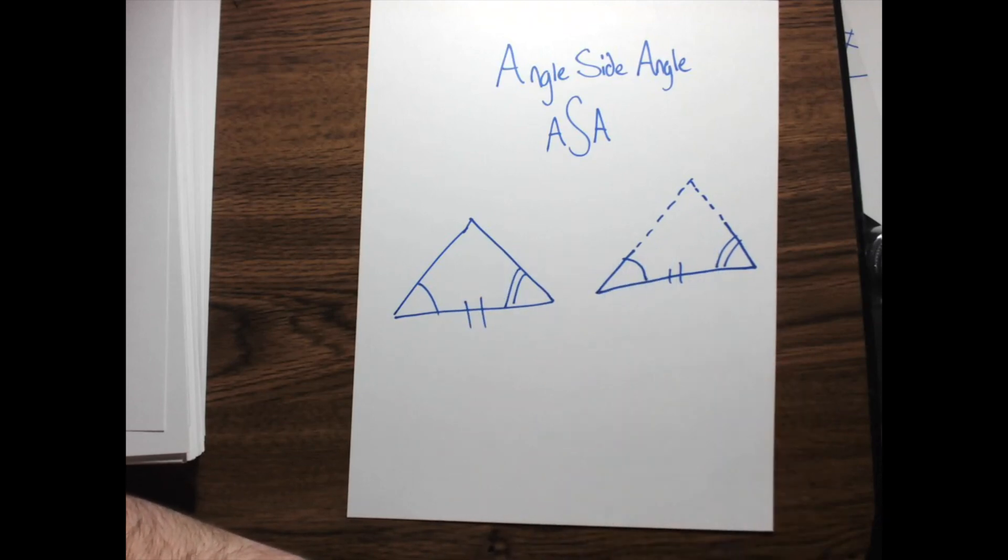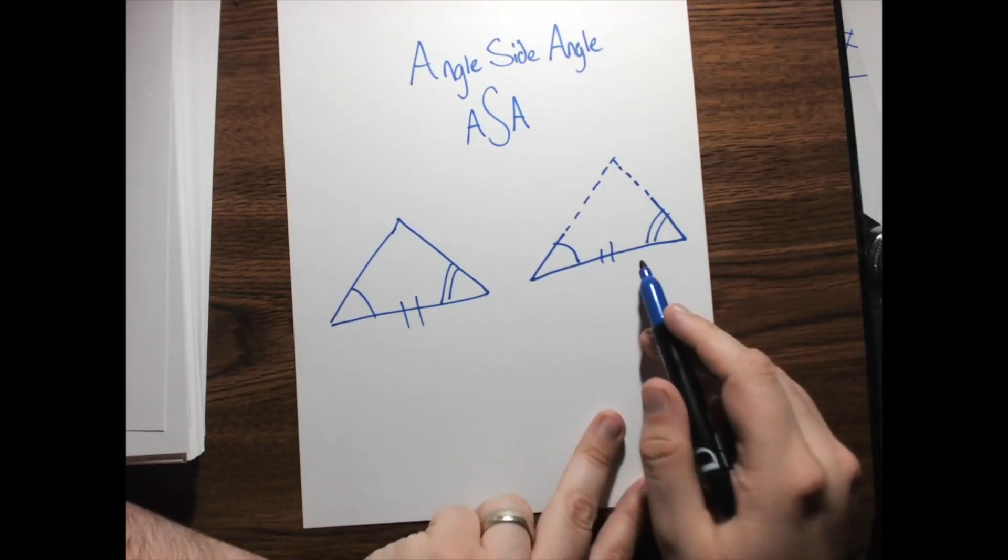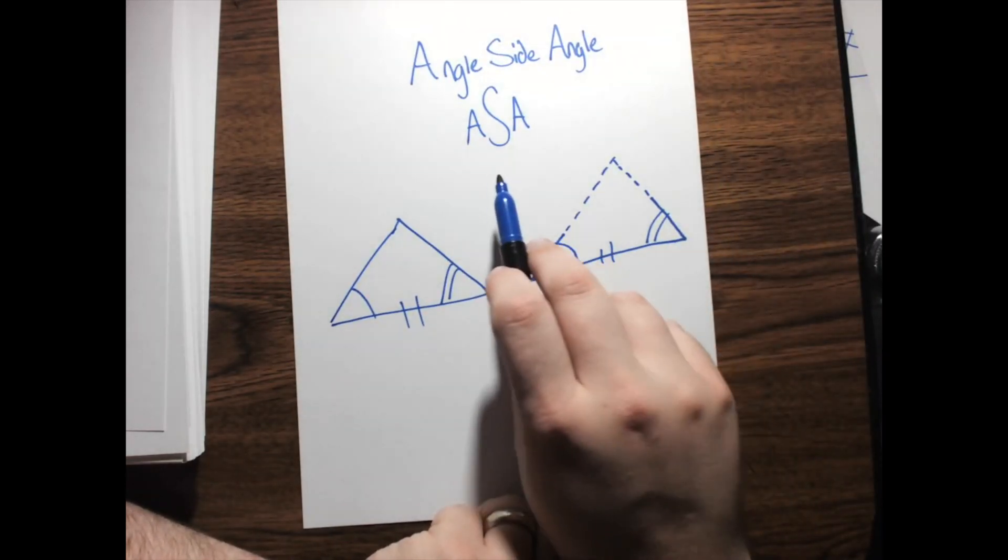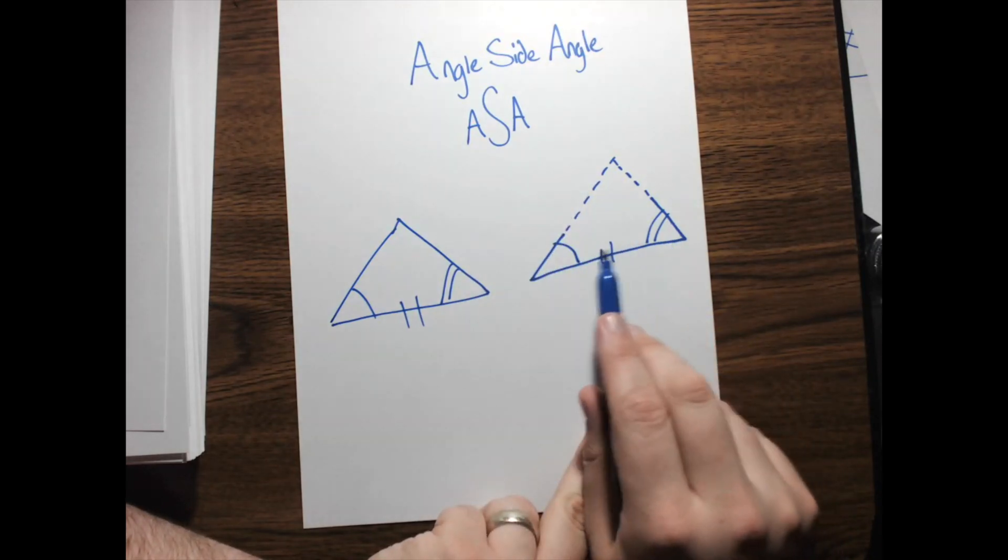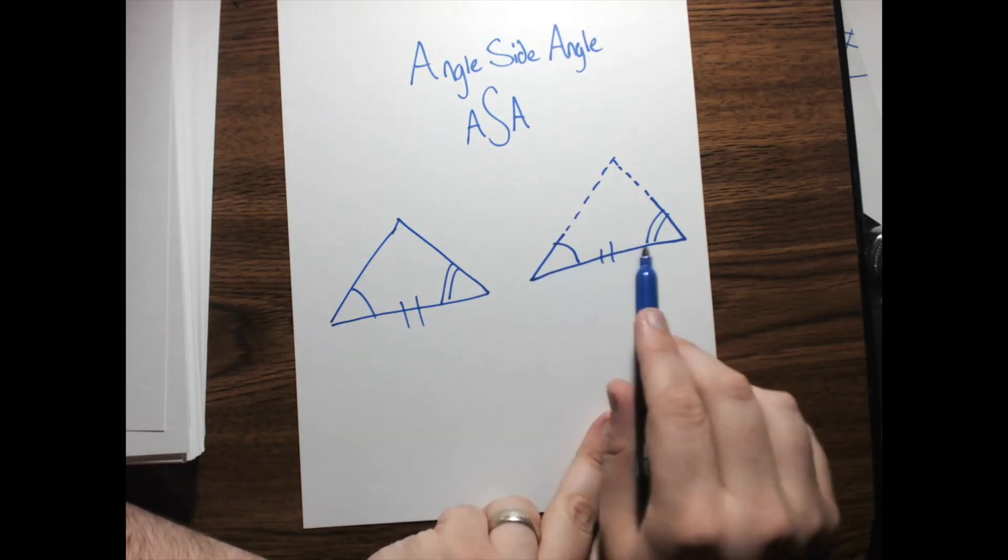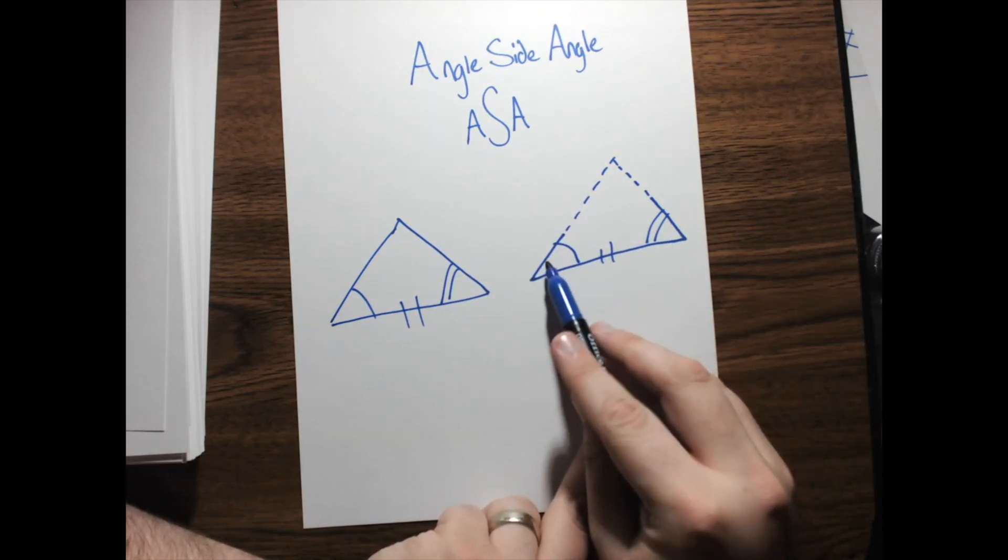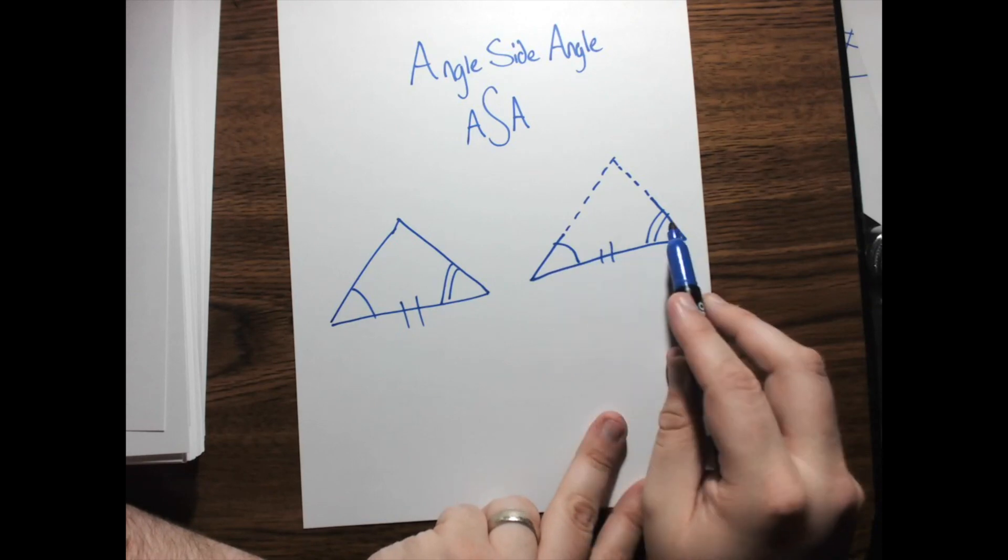So, angle, side, angle is all that we need to prove triangle congruence. Now, notice right here we have, once again, an included side. So, when it goes angle, side, angle, the line is in between the two angles. You would naturally just go, there's the angle, there's the side, there's the angle.